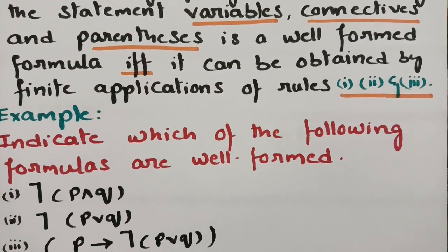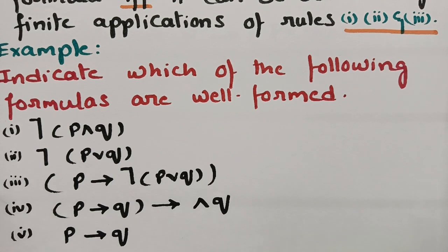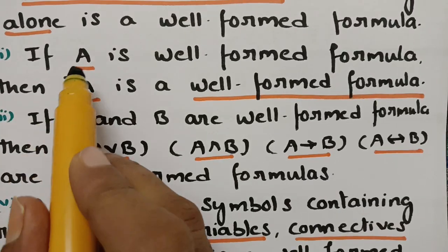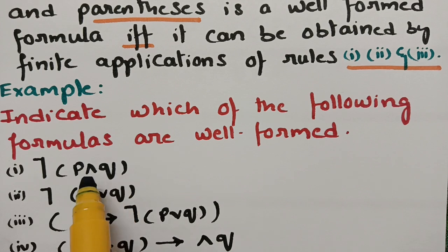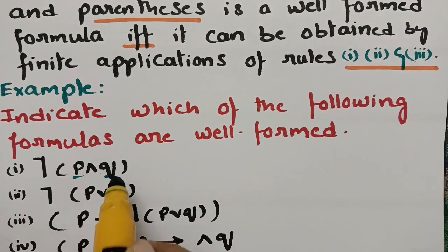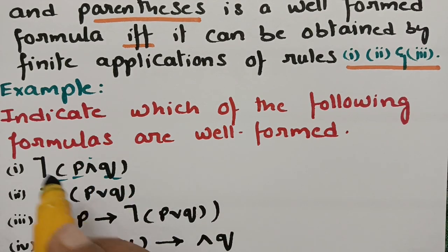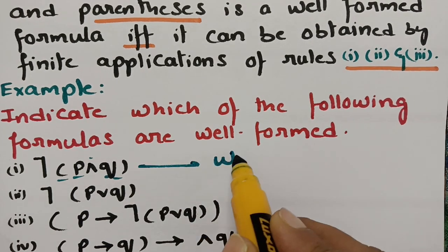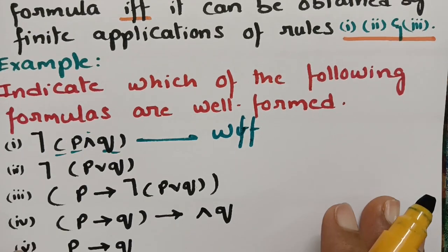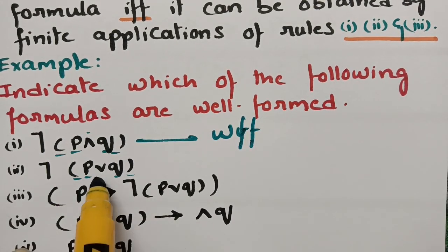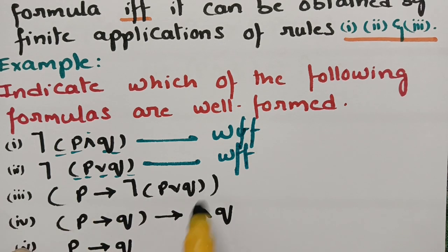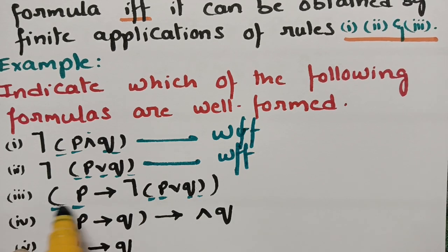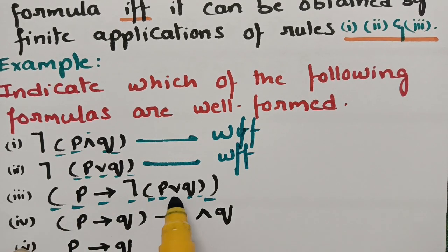For example: indicate which of the following formulas are well-formed formulas. The first one has negation — and according to the rule, if A is a well-formed formula then negation A is also a WFF. There are parenthesis, variables, and connective symbols, so all are present. Therefore it is a WFF. The second one also has variables, parenthesis, and connective symbols, and negation — so it is also a WFF. The third one has variables, complete parenthesis, negation, and connectives — so it is also a well-formed formula.